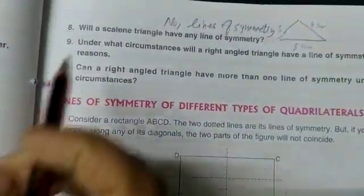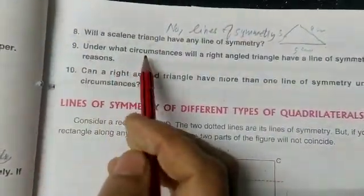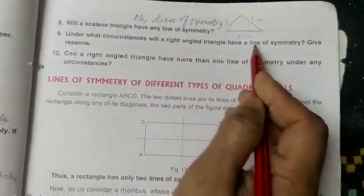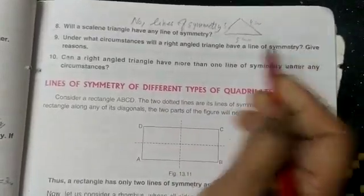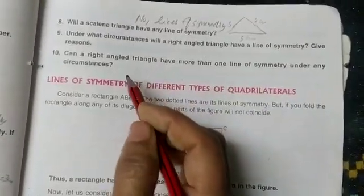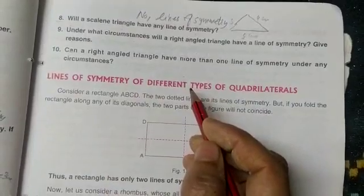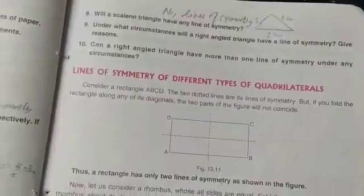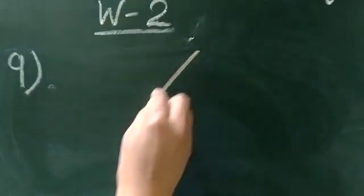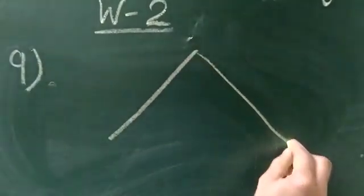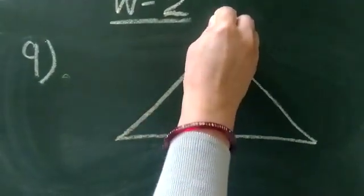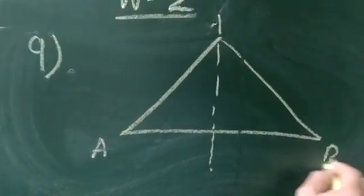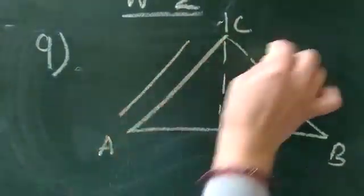Under what circumstances will a right-angle triangle have a line of symmetry? Give a reason. It should be an isosceles right triangle — it should have two equal sides. Suppose triangle ABC has two equal sides; it will have a line of symmetry.